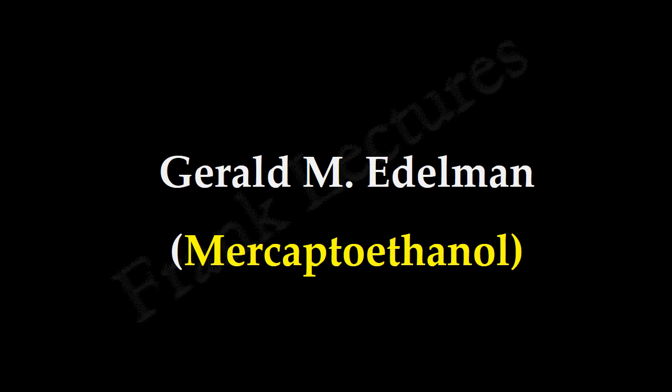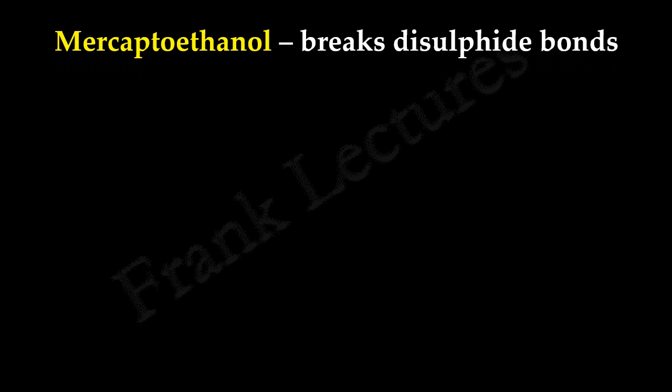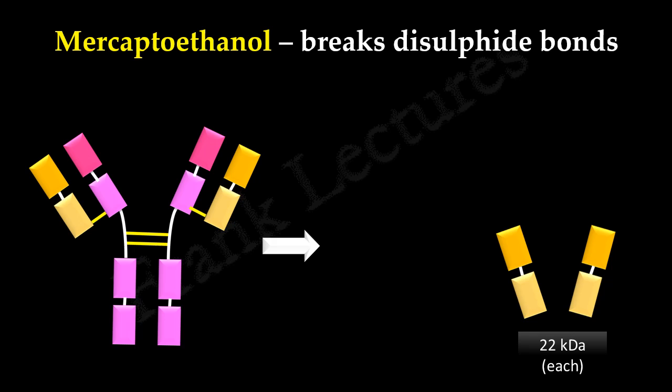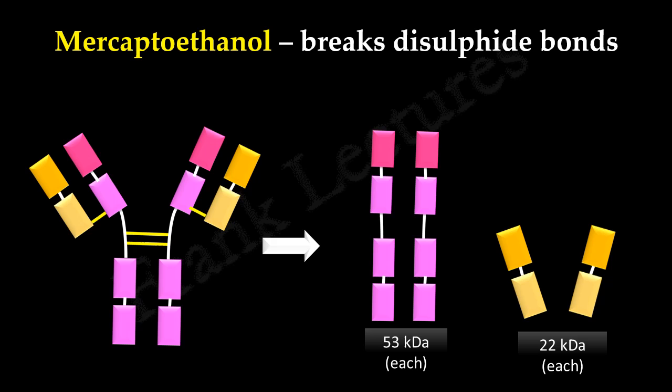Edelman treated immunoglobulin with the reducing agent mercaptoethanol and found that antibodies contain disulfide bonds. Mercaptoethanol is a reducing agent and it breaks disulfide bonds. As a result, all disulfide bonds are broken, leading to the splitting of immunoglobulin into two identical chains with a molecular weight of about 22 kD each, and two other identical chains with a molecular weight of about 53 kD each. The larger molecules were designated as H or heavy chains, and the smaller ones as L or light chains.